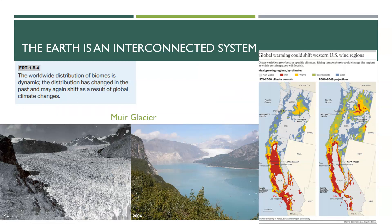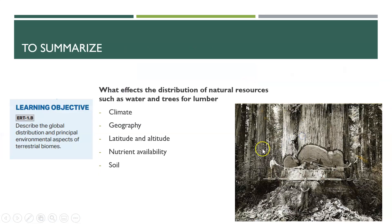Keep in mind that the distribution of biomes is dynamic — it changes over time. You can see this glacier below has receded quite a lot, changing where glaciers are due to changes in climate, and changing western wine regions. Lastly, it's important to remember that climate, latitude, altitude, and the type of nutrients in the soil all affect the type of natural resources available. For the biomes we talked about today, those resources could be water availability and trees for things like lumber.